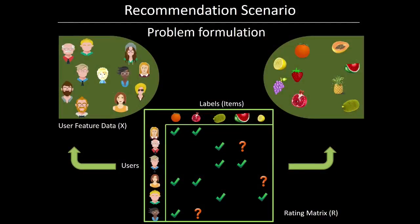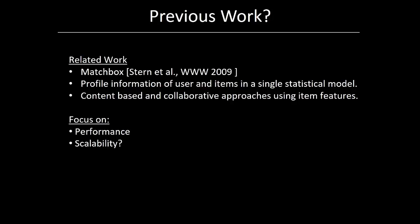Let's have a look at a typical recommendation scenario where we have some user and their user features. We also have some items or labels. For each user, we have some history — a user might have liked some item in the past — represented using the rating matrix R. One possible improvement is to use label features, that is the information provided by the labels, to give better recommendations. There hasn't been much work in the extreme classification setting making use of label features. There has been some work in recommender systems such as Matchbox, but the main issue is that those are not scalable to the level of extreme classification, where we are dealing with millions of labels.